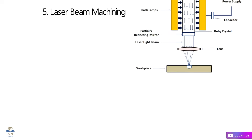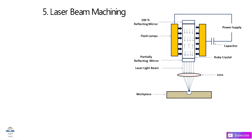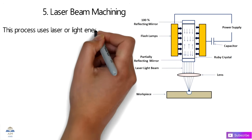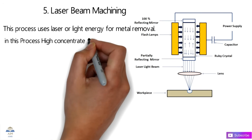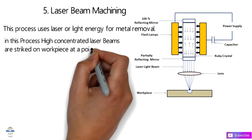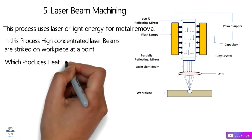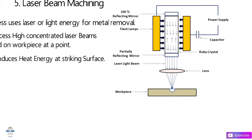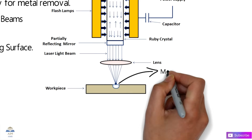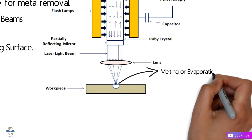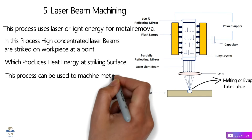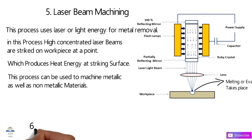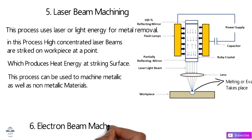The next process is Laser Beam Machining. This process uses laser or light energy for metal removal. Highly concentrated laser beams strike the workpiece at a point, producing heat energy at the striking surface. The concentrated laser causes melting or evaporation at that specific point. This process can be used to machine both metallic and non-metallic materials.